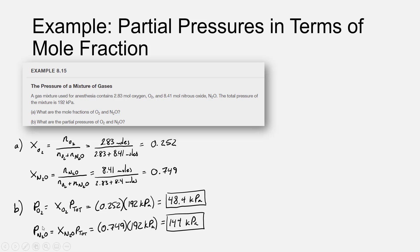Same process for N2O, the partial pressure of N2O is equal to the mole fraction of N2O times the total pressure, so 0.749 times the total pressure of 192 kilopascals. The partial pressure of N2O in this mixture would be 144 kilopascals. It's worth a check to make sure that the two partial pressures that we got roughly add up to the total pressure.